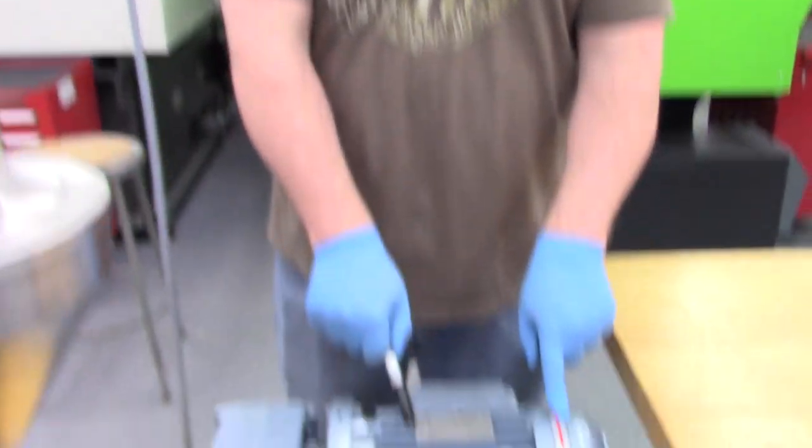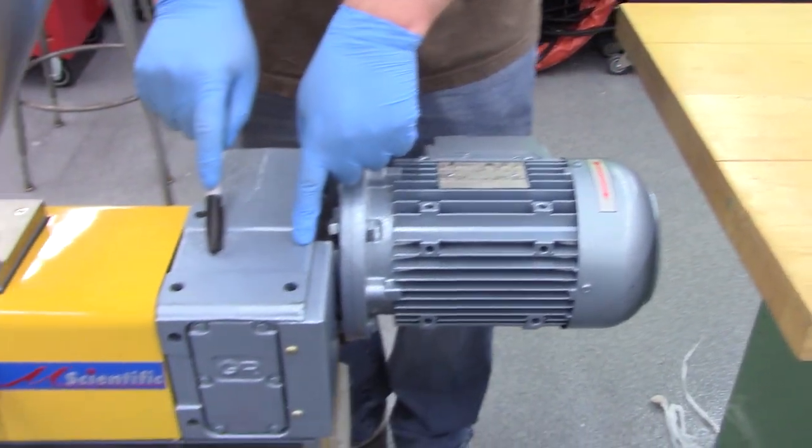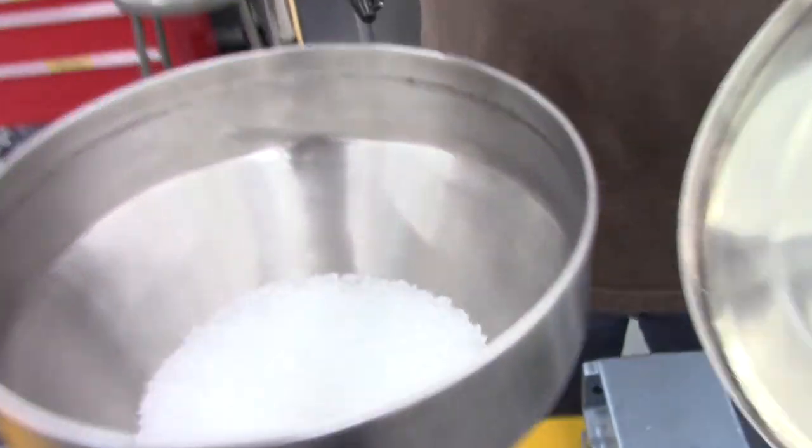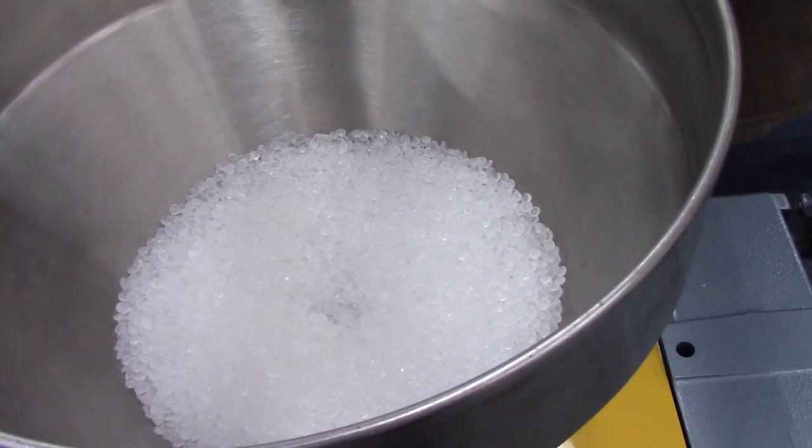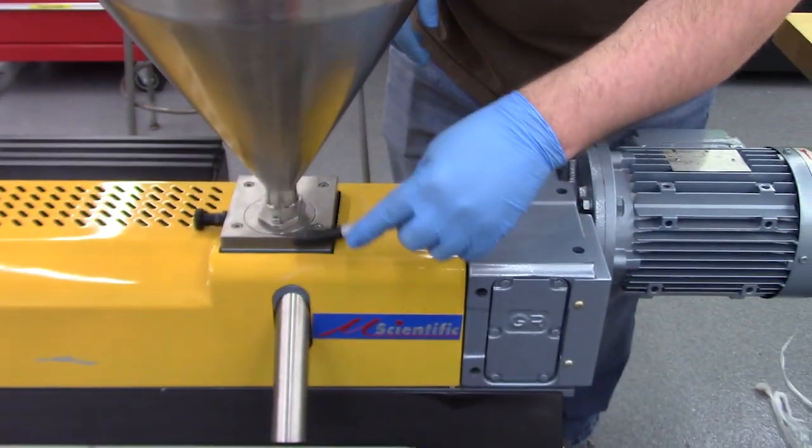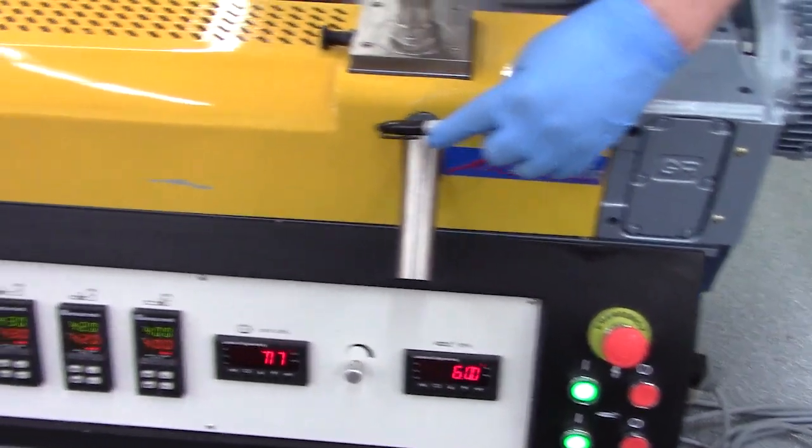Just like on the twin skirt extruder, this is a single skirt extruder. We have a drive motor, a gearbox, a hopper that's filled with resin pellets. Pellets drop down through the feed throat into the barrel and screw assembly.